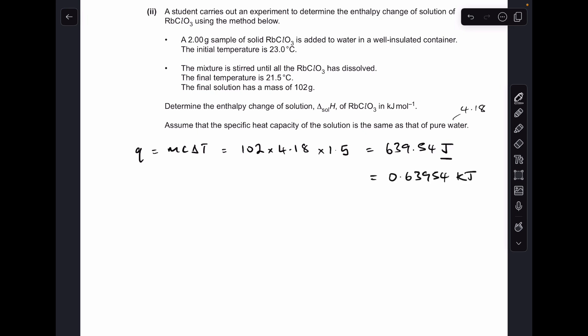And because we've got to calculate the enthalpy change of solution in the typical units of kilojoules per mole, we need to put that into kilojoules, so we divide by 1,000 to do that. Next thing we do is work out how many moles of this rubidium chlorate have been dissolved. So mass over MR, 0.01183. The dot dot dot just means that I'm keeping the full number in my calculator.